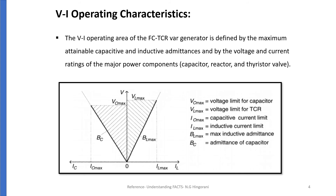The VI or operating characteristics of FCTCR are defined by the maximum attainable capacitive and inductive admittances, and by the voltage and current rating of the major power components — that is, the capacitor, reactor, and the thyristor valve. Here we can see the operating area of FCTCR: maximum capacitive voltage, maximum inductive voltage, maximum capacitive current, and maximum inductive current. BC is the admittance of the capacitor and BLmax is the maximum inductive admittance of the FCTCR. FCTCR operates within this range as shown in the shaded area.